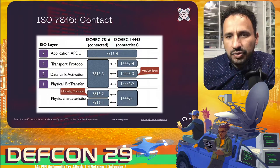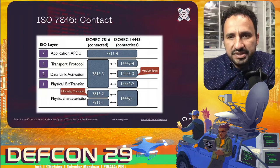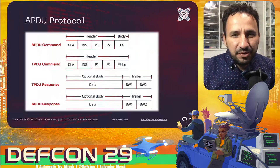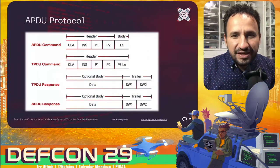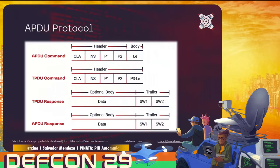Let's analyze the APDU command format and the APDU response format — how they know how to answer back and what format will be used. The APDU command has a header and a body. The body contains the length of the command and the data. In the response we have the data and a trailer, which is the status of the previous command from the terminal — indicating if the command was executed correctly or if something went wrong.